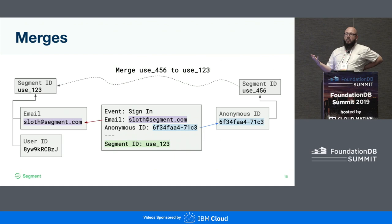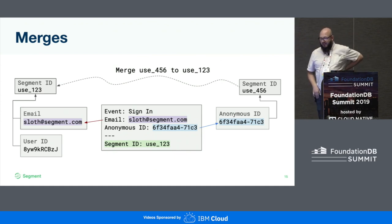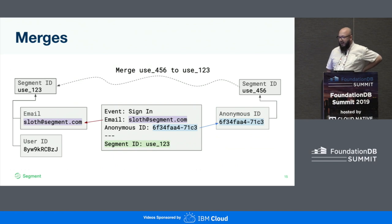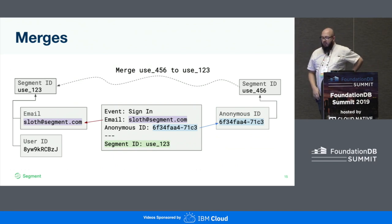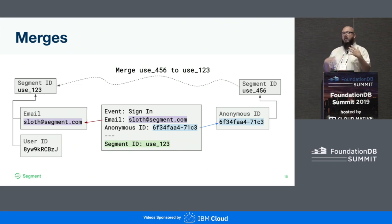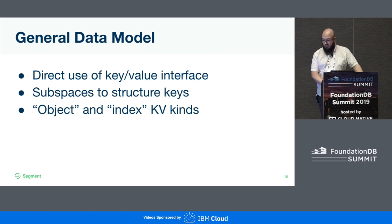This comes with a problem: we generate these new universal IDs all the time, and we want to be able to, at a future time, merge those together when we realize they're actually connected via some other element of data. That is what we would call a merge.